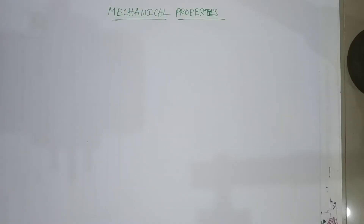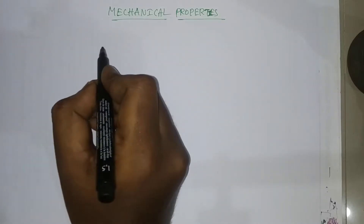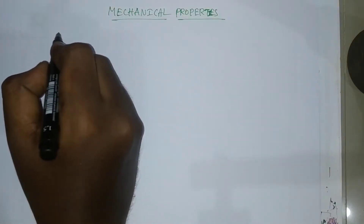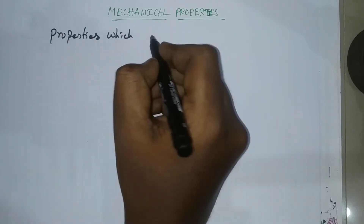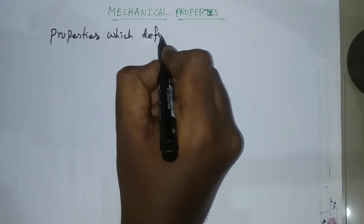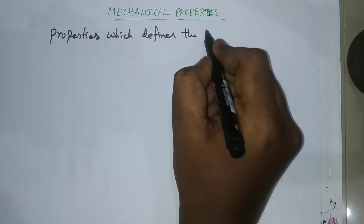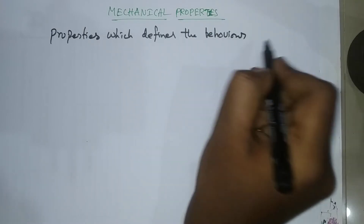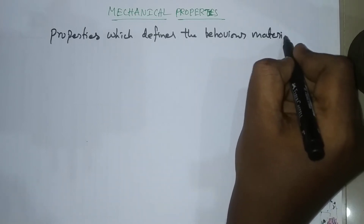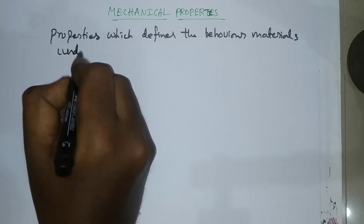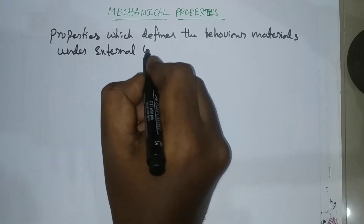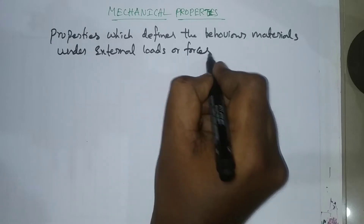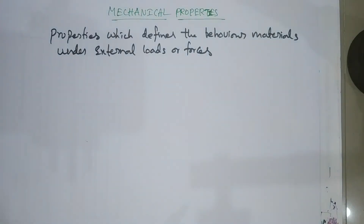Hello everyone. Here we discuss mechanical properties. Mechanical properties of materials — definition: properties which define the behavior of materials under external loads or forces.